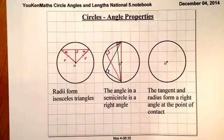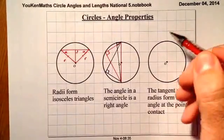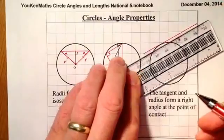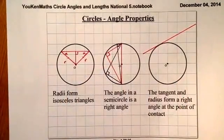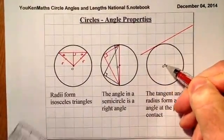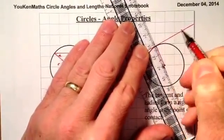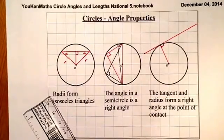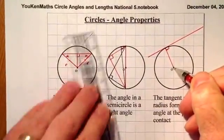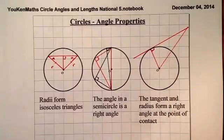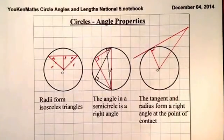The tangent to a circle: if I draw a line that just touches the circle at one point, that's a tangent. Wherever I've got a tangent — a line just touching the circle at one place — if I join a line from the centre of the circle to that point of contact, I'm going to form a right angle. So again, another property to remember. And if I draw a line from the centre out to a point on that tangent, there's a right-angled triangle, which will be useful for trig ratios and Pythagoras' theorem.